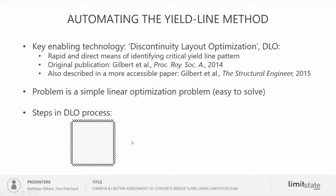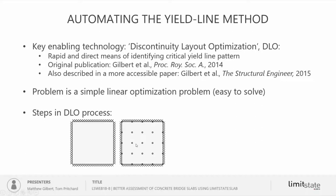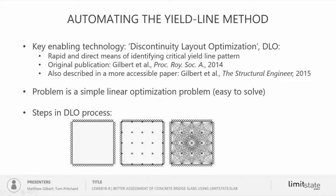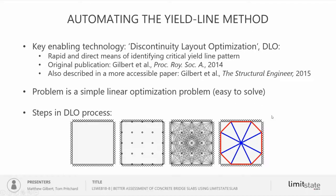You can have a whole variety of different arbitrary failure mechanisms identified very, very quickly using this software. That brings me to the question: how does this automated yield line method work? It uses something called Discontinuity Layout Optimization, or DLO for short. The original publication describing DLO for slabs was published in 2014, and also described in a more engineer-friendly paper in 2015 in The Structural Engineer. In mathematical terms it is a very simple linear problem — easy to solve. In terms of how it works: you imagine a slab, discretize the geometry with nodes, connect each node to every other node with a potential yield line, and then use optimization to find the minimum energy or critical yield line pattern.